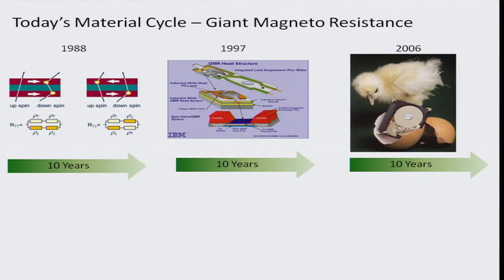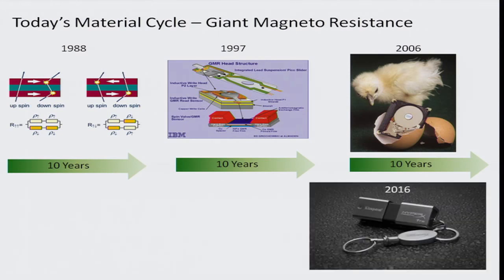To get an idea of today's materials and the development cycle, let's talk about giant magnetoresistance — a material property where you can change the resistance of a material by small changes in a magnetic field. This is one of the key technologies that allowed us to shrink hard drives down to write and read smaller and smaller bits in magnetic media. About 10 years in, 1997 saw the first hard drives with a GMR head. Then in 2006, we actually started having micro drives small enough to fit in pocket-held devices. Today we have solid-state hard drives that far exceed the capacity of a lot of these magnetic media, but based on a completely different material technology.